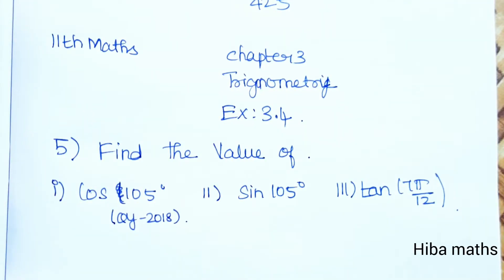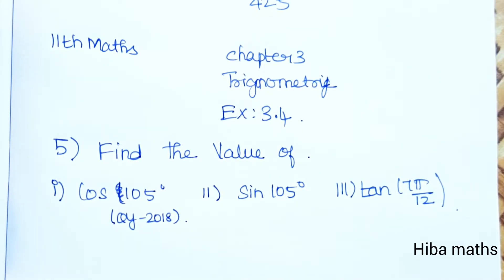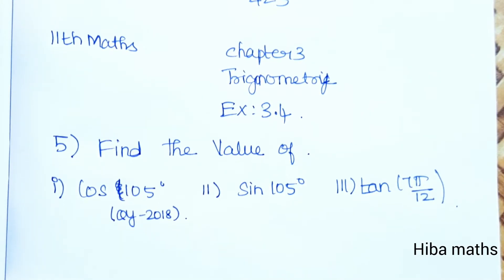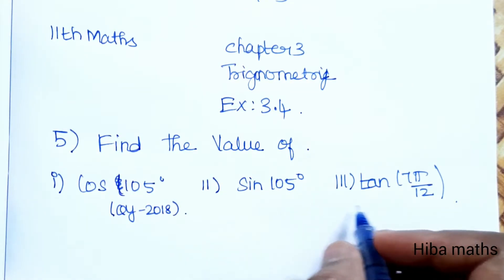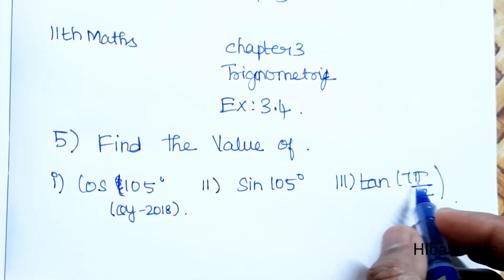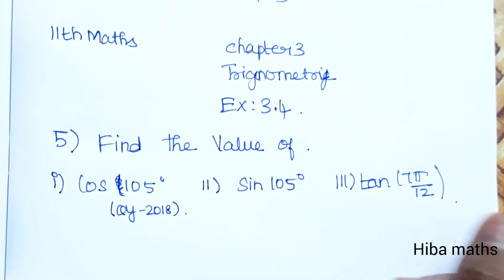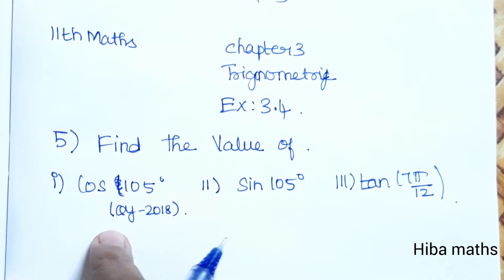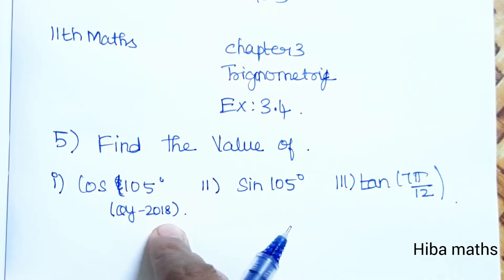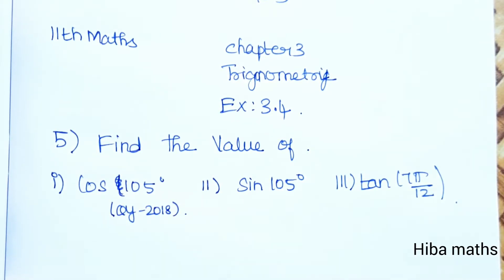Hello students, welcome to HIPAA MAX 11 standard, Chapter 3 Trigonometry, Exercise 3.4, 5th question. Find the value of cos 105 degree, sin 105 degree, and tan 7 pi by 12. Note that cos 105 degree is a 2018 quarterly exam question.